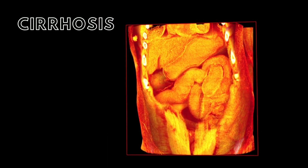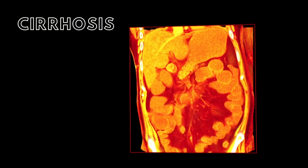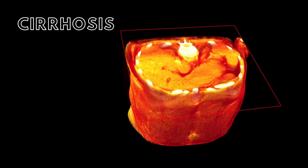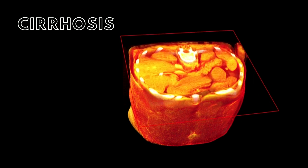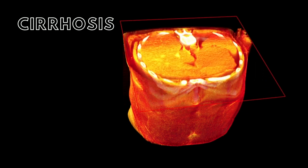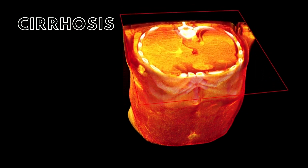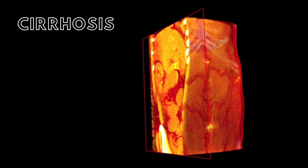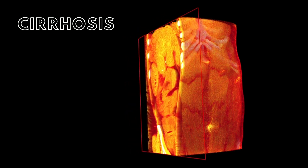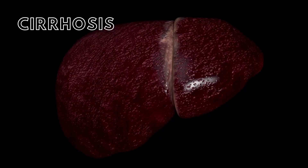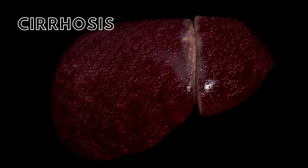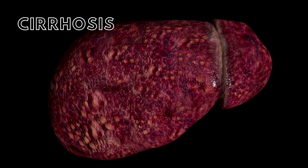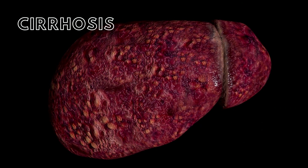Cirrhosis is when extensive scarring of the liver impedes its ability to perform its functions. Cirrhosis is caused by many different types of liver diseases and conditions, like hepatitis and chronic alcoholism, that damage the liver. When the liver is damaged by these diseases and conditions, the liver repairs itself, which in turn creates scar tissue. The more scar tissue formed, the harder it becomes for the liver to function. Advanced cirrhosis can be life-threatening.